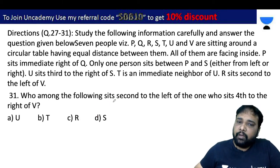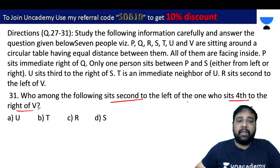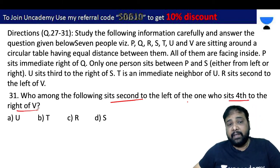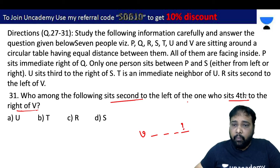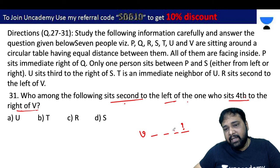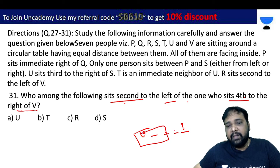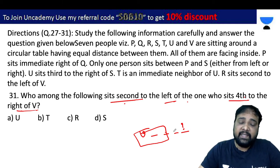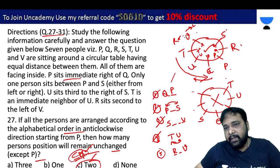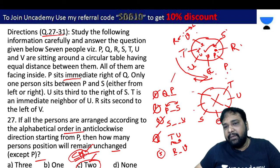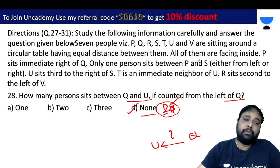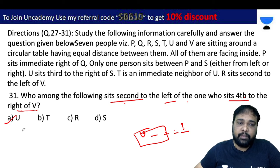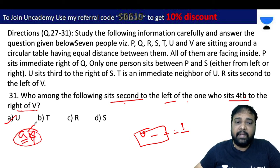Next: who among the following is the 2nd left of the one who is 4th to the right of V? Starting from V, count 1st, 2nd, 3rd, 4th to the right, then from that position count 1st, 2nd to the left — the answer is U. First option only is the right answer for problem number 31.